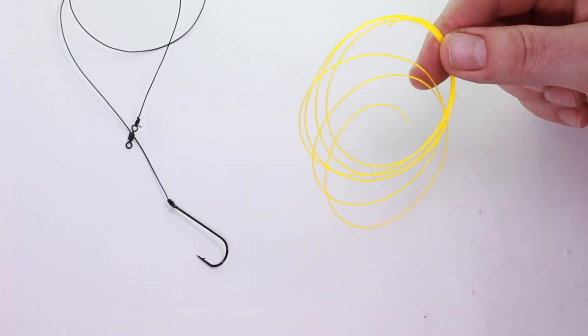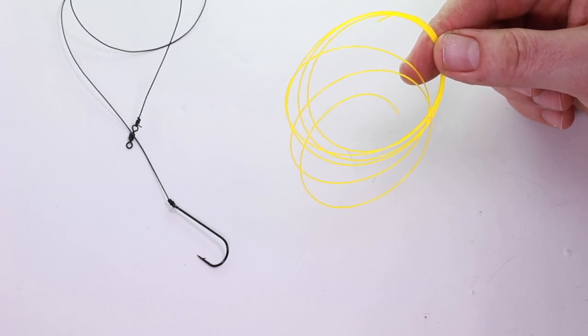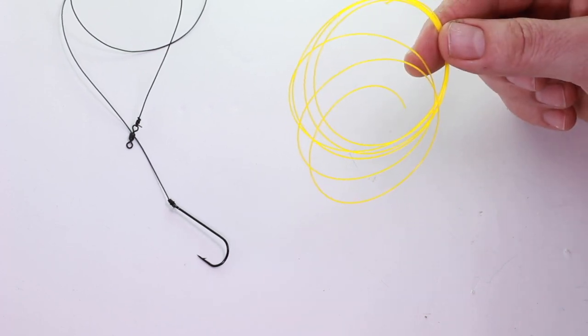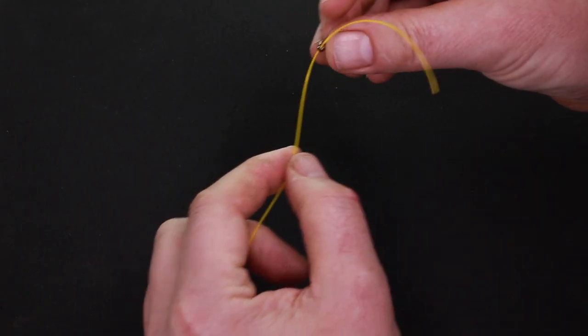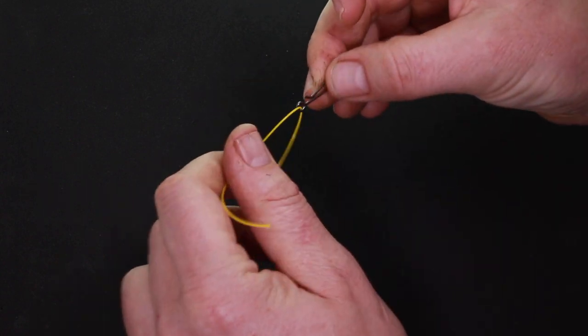And then all I've done for this next bit is taken about a meter of 60 pound line, so obviously slightly thicker than your snood line there. And then one end of this you're going to tie your leg clip.